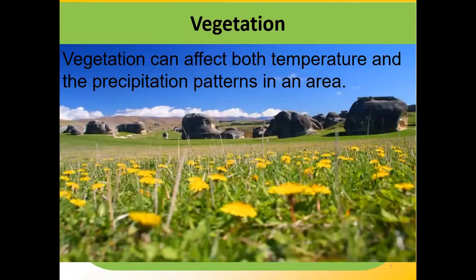These variations have given rise to variety in the lives of people — their food, their clothes and their houses. Vegetation can affect both temperature and the precipitation pattern in an area. The seasonal contrasts are more in the interior of the country, and there is a decrease in rainfall as we move from east to west in the northern plains. These variations have led to so many varieties in the life of people in the form of food they eat, the clothes they wear, and the houses they live in.